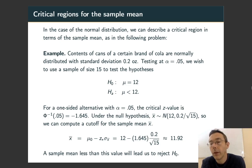Contents of cans of a certain brand of cola are normally distributed with standard deviation 0.2 ounces. Testing at α = 0.05, we wish to use a sample of size 15 to test the null hypothesis that the mean contents are μ = 12 ounces against an alternative hypothesis that μ < 12.